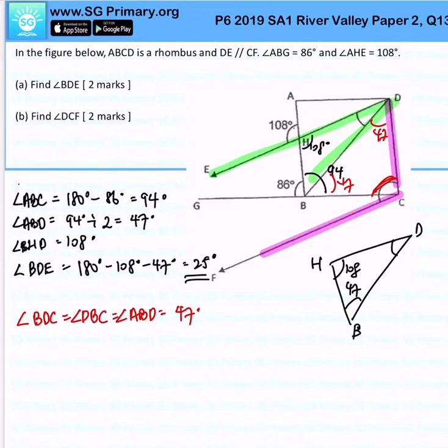Next angle EDC. Angle EDC is 25 degrees plus 47 degrees, and that would be 72 degrees.